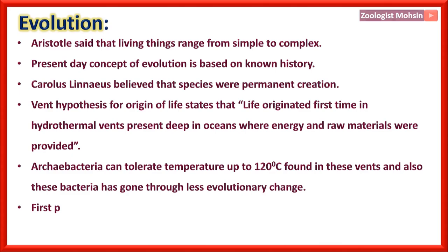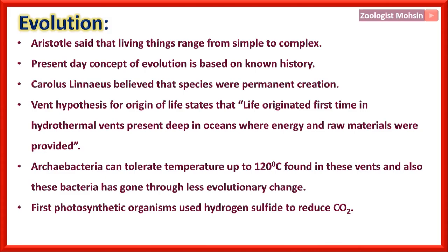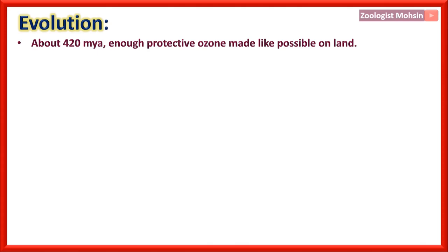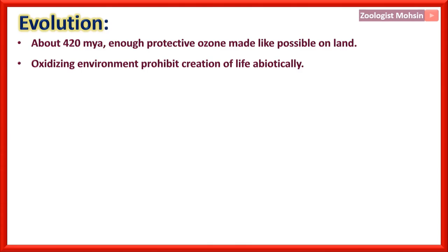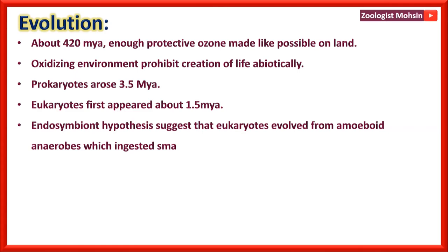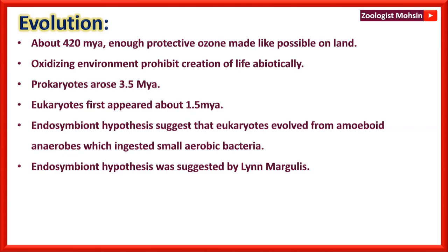First photosynthetic organisms used hydrogen sulfide to reduce carbon dioxide to carbohydrates. Later, water replaced H2S and liberated oxygen in the atmosphere about 420 million years ago. Enough protective ozone made life possible on land. The oxidizing environment present today prohibits abiotic creation of life or abiogenesis. Prokaryotes arose about 3.5 billion years ago. Eukaryotes first appeared about 1.5 billion years ago. The endosymbiont hypothesis, suggested by Lynn Margulis, proposes that eukaryotes evolved from amoeba-like anaerobic prokaryotes which ingested small aerobic bacteria.